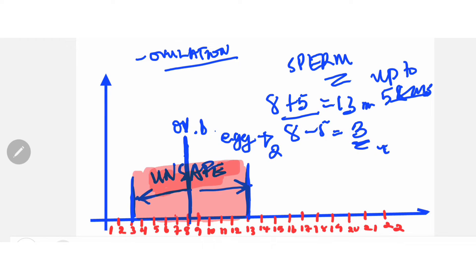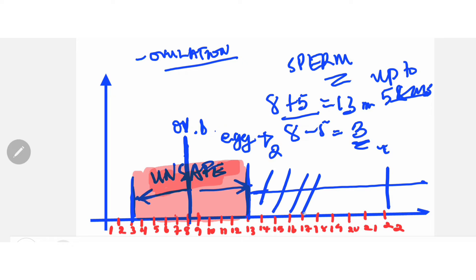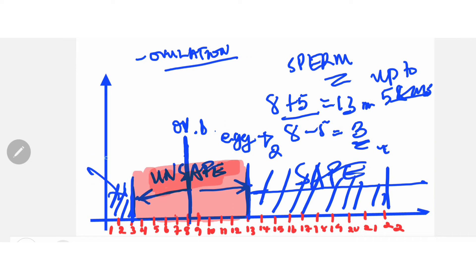The remaining days of the cycle — greater than day 13, going up to day 22, and also days 1 and 2 at the start of the cycle — these are the safe days. So those are the safe days of the 22-day cycle.